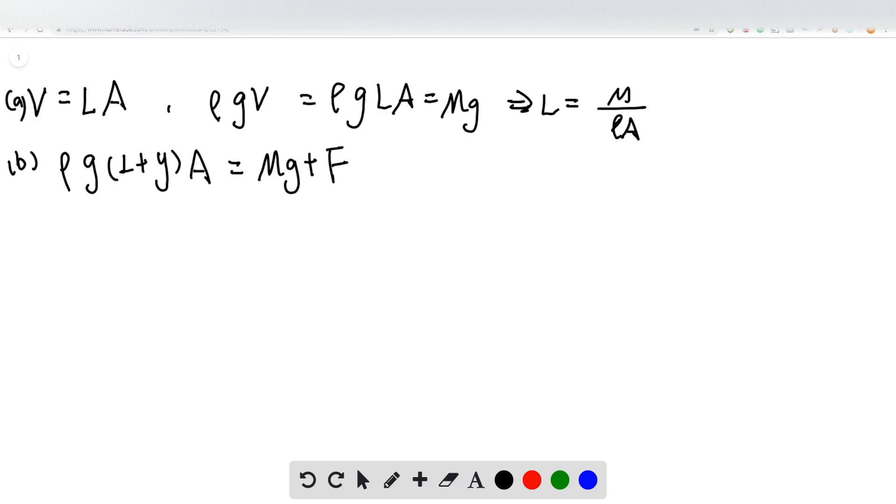That's the total net force going downward. So from this equation, we already know that ρGLA is equal to mg. So this part and this part cancel. So the Y is just simply F over ρGA.